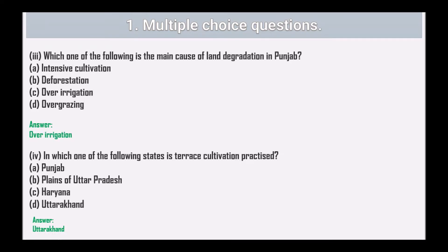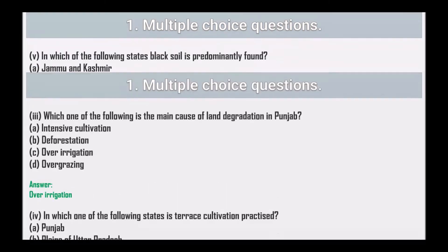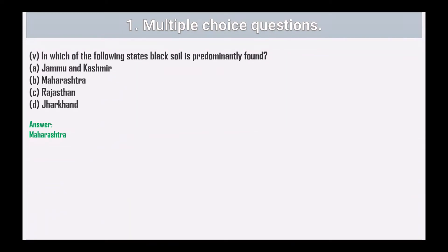Which one of the following is the main cause of land degradation in Punjab? The answer is over-irrigation. In which of the following states is terrace cultivation practiced? The answer is Uttarakhand. In which of the following states is black soil predominantly found? The answer is Maharashtra.